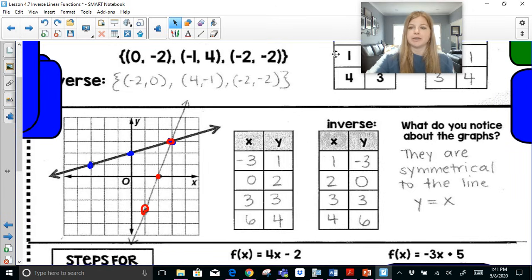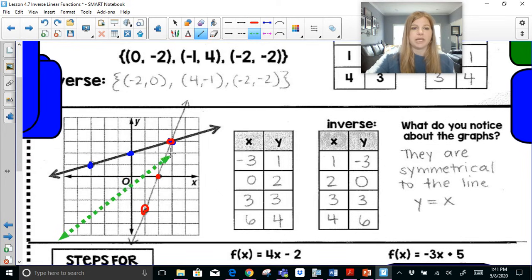So what do you notice about the graphs? They are symmetrical to the line y equals x. So again, it's one of those things where if I draw y equals x, I'm going to see that this graph, if I reflected it over that line, would be this line here.